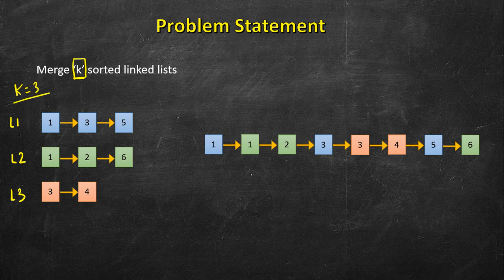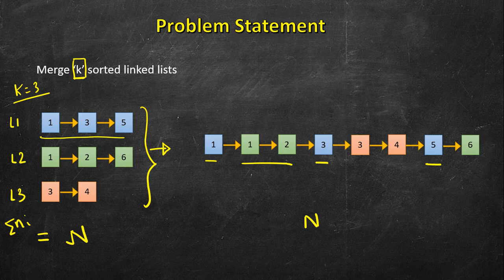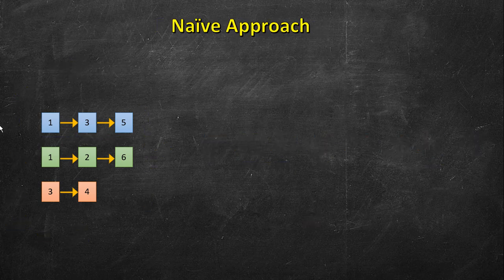The goal is to create one singly linked list out of all K linked lists such that it is also sorted. The total number of nodes is the same in both. I have color-coded the nodes so you can see the light blue nodes coming from the first linked list, the greenish ones from the second linked list, and so on.